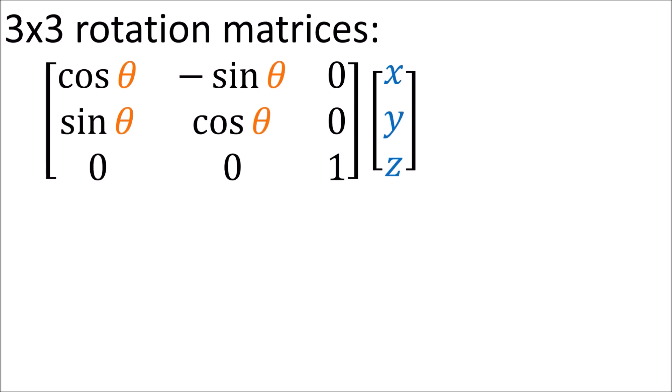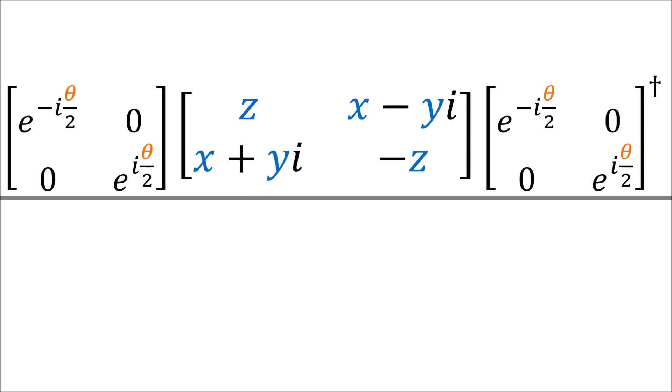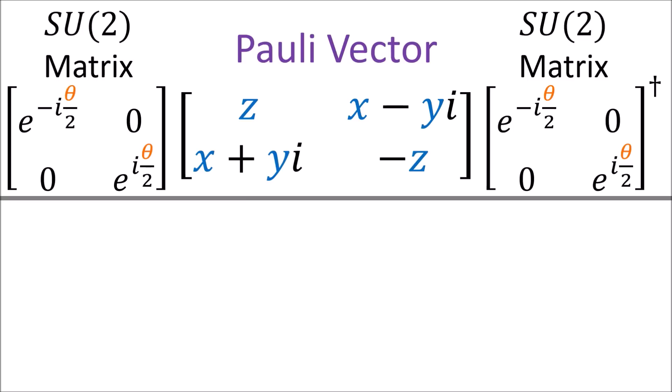In the last video I showed that instead of rotating a 3D vector with a 3x3 rotation matrix, we can instead rotate it using a double-sided transformation. We rewrite the vector as a 2x2 matrix called a Pauli vector and multiply it on either side with an SU2 matrix on the left and the Hermitian conjugate of that SU2 matrix on the right.